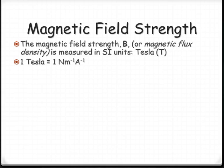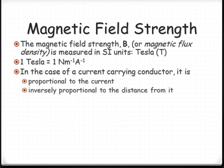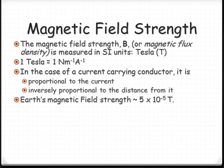In the case of what we're looking at today, the current carrying wire, it's proportional to the amount of current that's flowing and it's inversely proportional to the distance that it is from the field. And just to give you an idea of the size of the unit, the Earth's magnetic field strength is around 5 times 10 to the negative 5 Teslas.